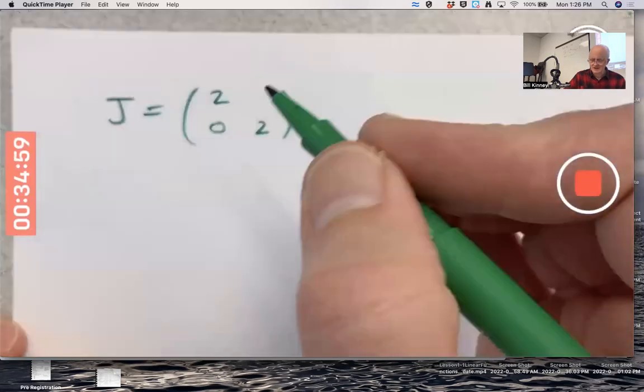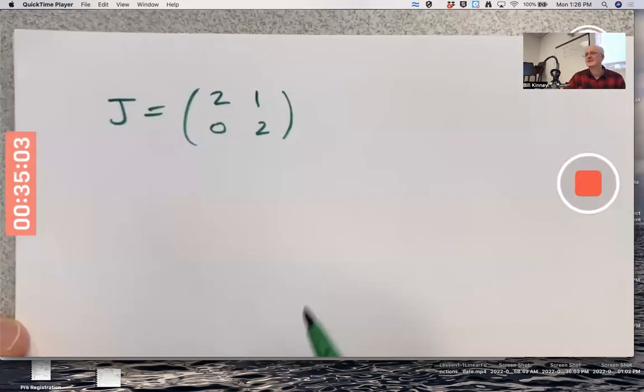So what's a Jordan canonical form? Put something, well, put a one up there. That's a Jordan canonical form.